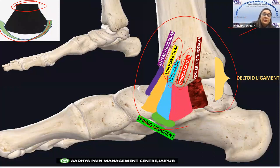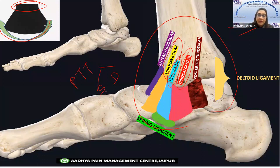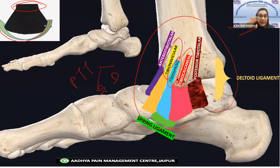There is a controversy regarding the posterior tibio-talar ligament because it has a superficial component and a deep component. Some researchers include the superficial component in the superficial layer of the deltoid ligament, while others do not. You can learn it either way — placing the superficial component of the posterior tibio-talar in either layer is acceptable.